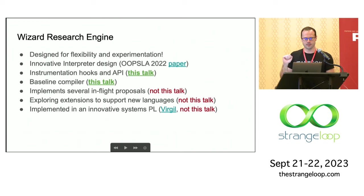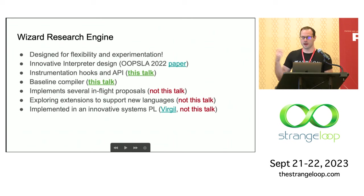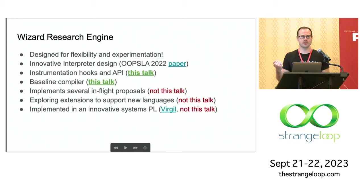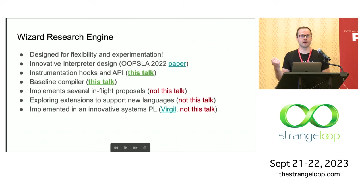What is in this talk: I'm going to talk about instrumentation and the hooks in the API, because getting insight into the dynamic execution of programs and the VM itself is the important thing. I'm going to talk a little bit about the baseline compiler, which is how Wizard competes with production VMs in being fast. What I'm not going to talk about — though also cool — is that it implements several extensions proposed for WebAssembly, like garbage collection, exception handling, multi-memory, and things like that. I'm also not going to talk about exploring extensions to support new languages on WebAssembly.